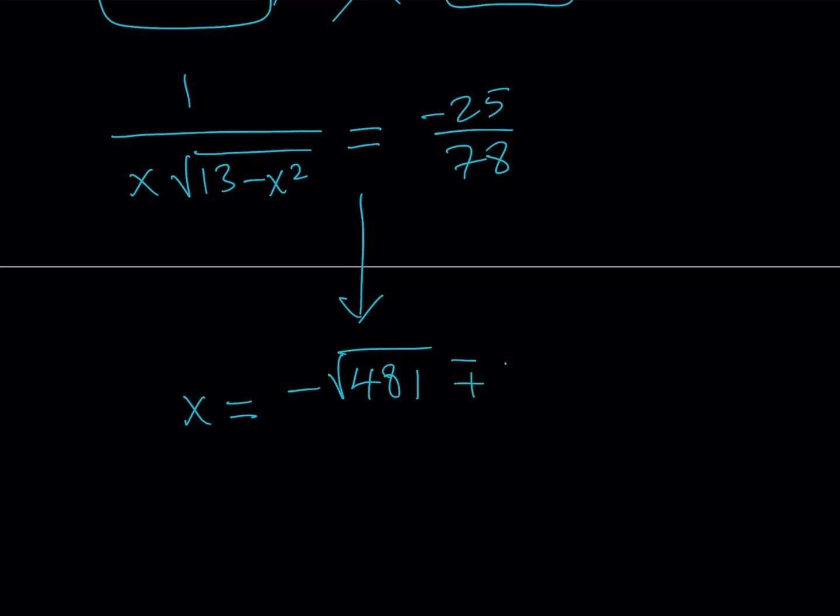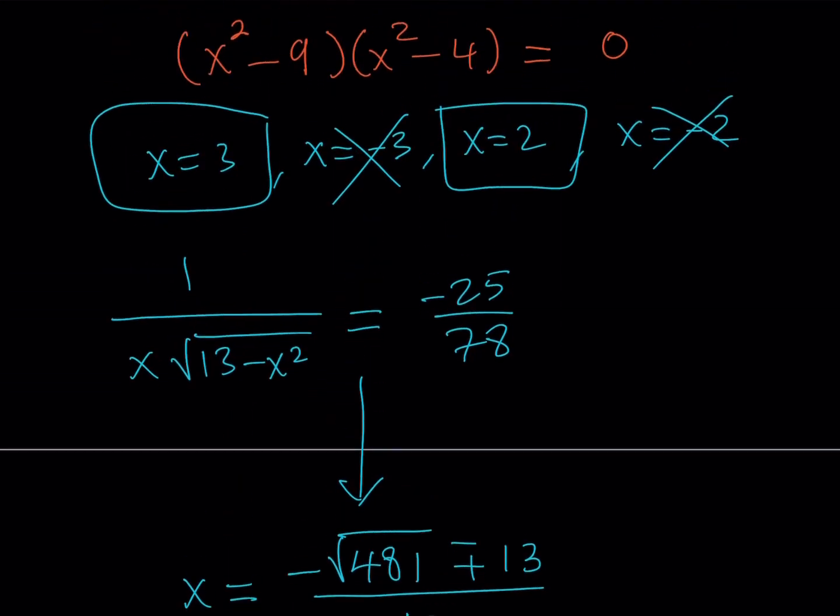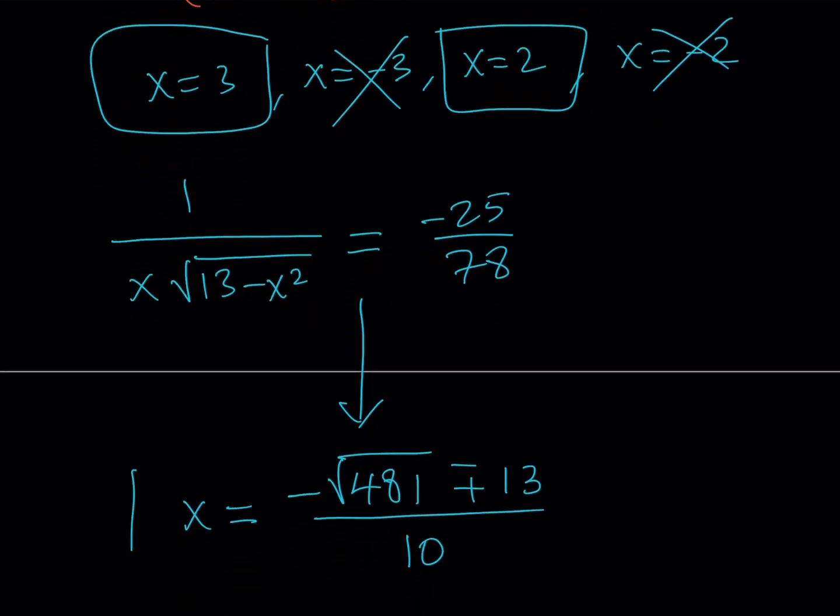But the x values that come from here are going to look like negative square root of 481 plus or minus 13 divided by 10. Okay. So we're going to have four x values, which is kind of expected because we're getting a quartic equation, and those are the solutions.